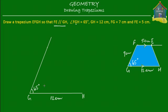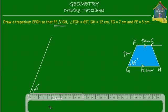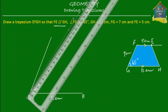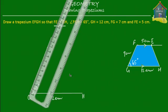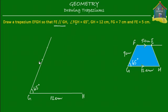We know that FG will be equal to 7 centimeters, so we use a ruler to mark 7 centimeters from G. Somewhere over here is 7 centimeters — this becomes our point F. We cut off this line here, so this becomes F and GF is equal to 7 centimeters.